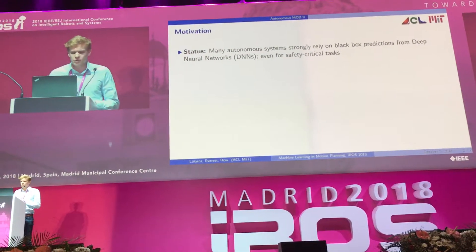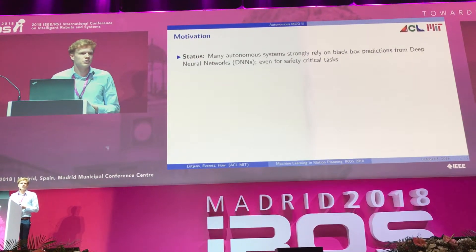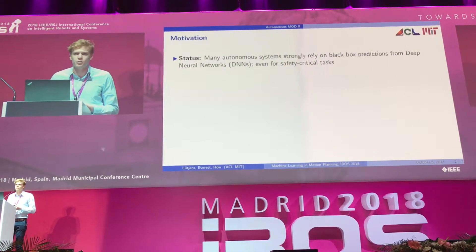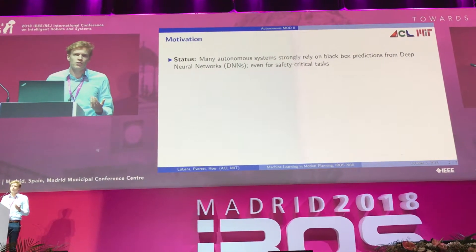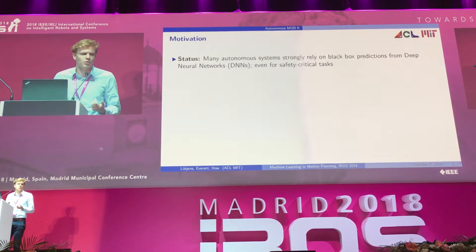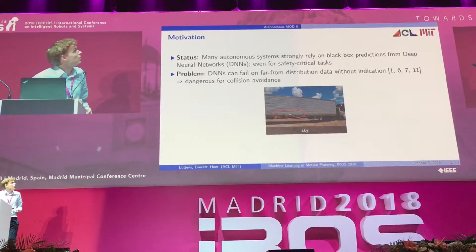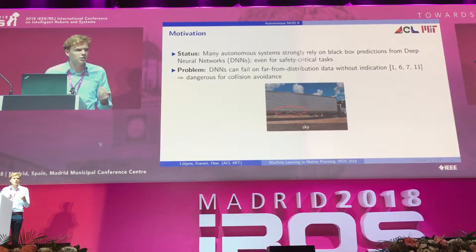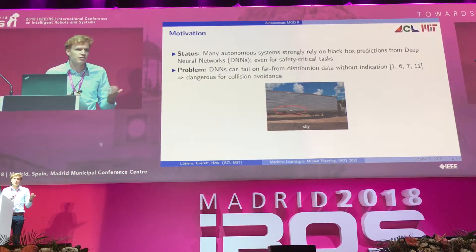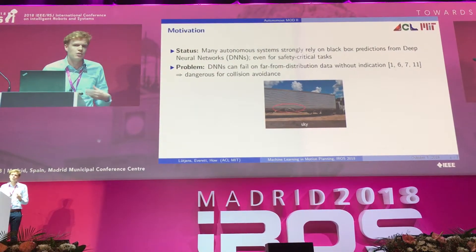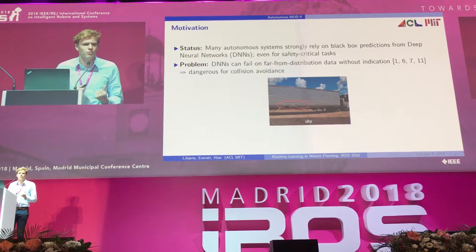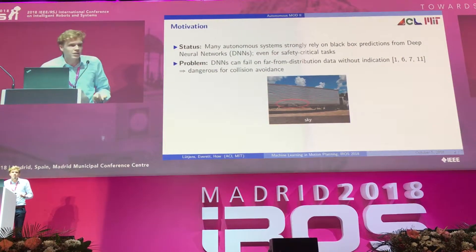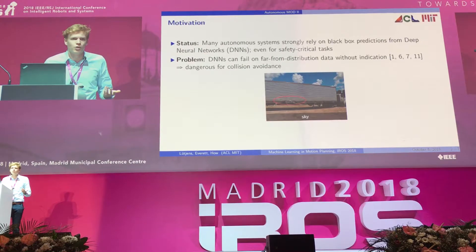The current status in robotics is that many autonomous systems strongly rely on black-box predictions from deep neural networks, and they do that even for safety-critical tasks such as autonomous navigation. The problem is that deep neural networks can fail on data that's far away from the training dataset, and they do so without any indication of their failure. That is especially dangerous for collision avoidance.